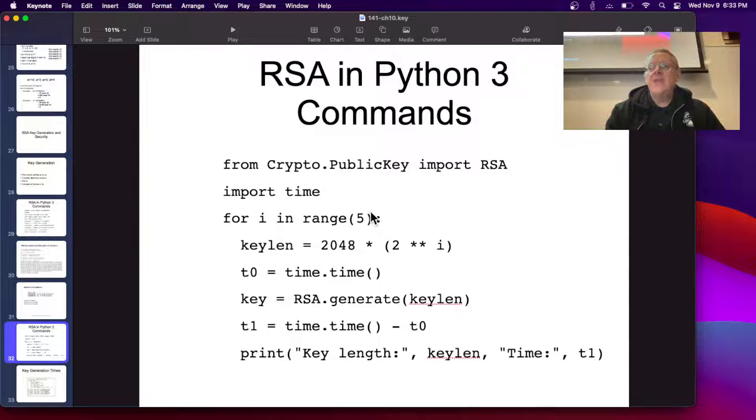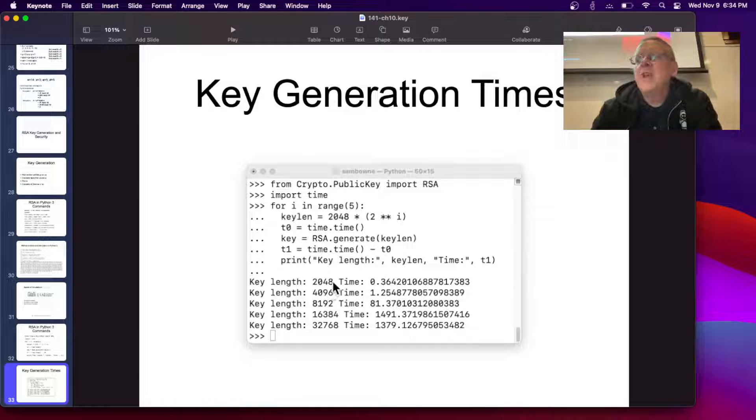So, you can do it in Python. And this is how you, yeah, this one will just try various lengths. 2048 times 1, 2, 4, 8, 16. This is how I did it. And then start a clock and calculate how long it took to generate the key and print them out. So, when I ran that script, it gave you this answer. For 2048, it took 0.3 seconds. 4096 took 1.2 seconds. 8192 took 81 seconds. This took 1,400 seconds. And this took about 1,400 seconds. There's some variation. So, you see, it gets to take a really long time. This is a minute, and this is like 15 minutes, just to calculate one key. So, long keys get very unwieldy with RSA.